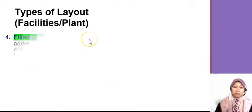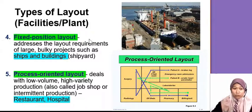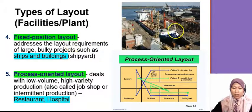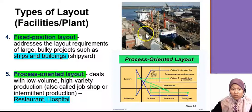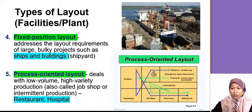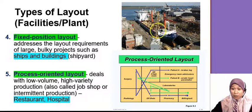Now the type for the manufacturing for goods. So there's four that you need to know. The first one is the fixed position layout. This one is for bulky items, for example shipyard, okay, construction, building construction, in which the product or the item that is being made stays fixed — dia tak bergerak mana-mana. So because it's huge, contohnya shipping and also building construction.